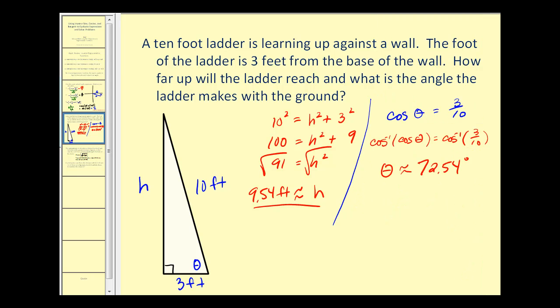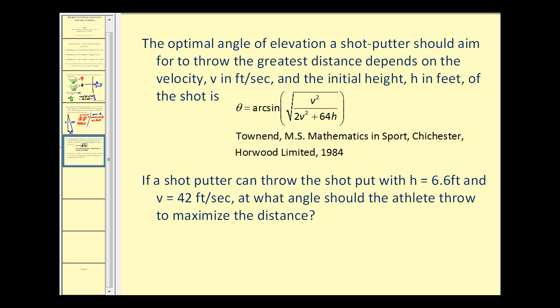Let's go ahead and take a look at one more. The optimal angle of elevation a shot putter should aim for to throw the greatest distance depends on the velocity in feet per second, and the initial height h, in feet, of the shot is given by this equation. So our question is, if a shot putter can throw the shot put with height of 6.6 feet, and a velocity of 42 feet per second, at what angle should the athlete throw to maximize the distance?